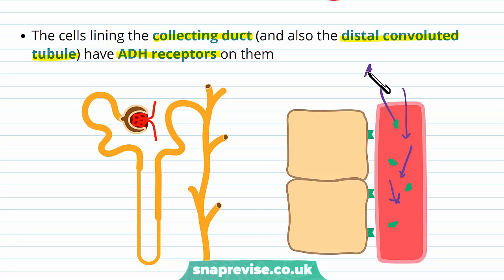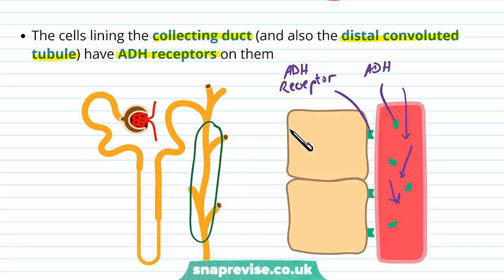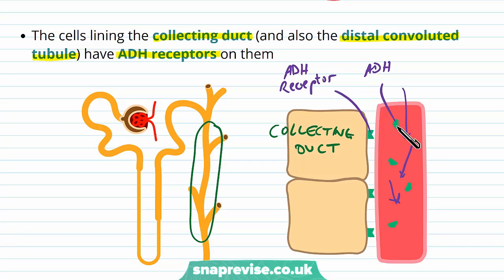The ADH molecule binds to an ADH receptor, which is a protein molecule complementary in shape to the ADH molecule. The cells that have this receptor are located on the collecting duct of the nephron. Because these cells face the blood capillaries running alongside the nephron, the ADH simply diffuses out of the blood straight to the cells on their basal side, which line the collecting duct.